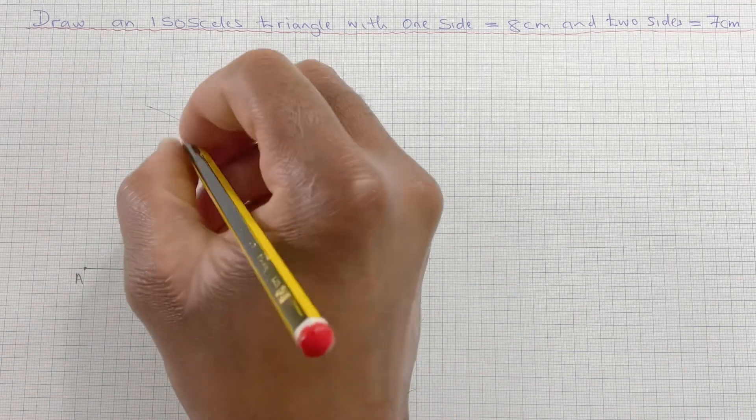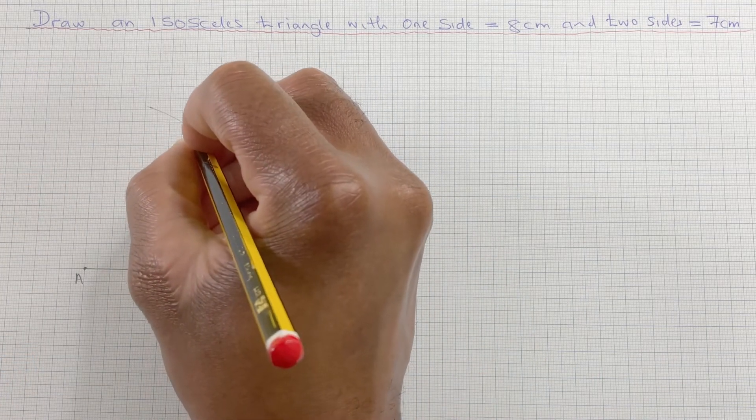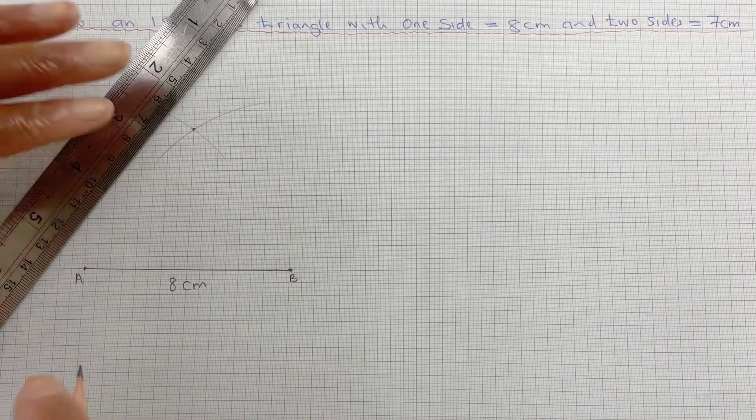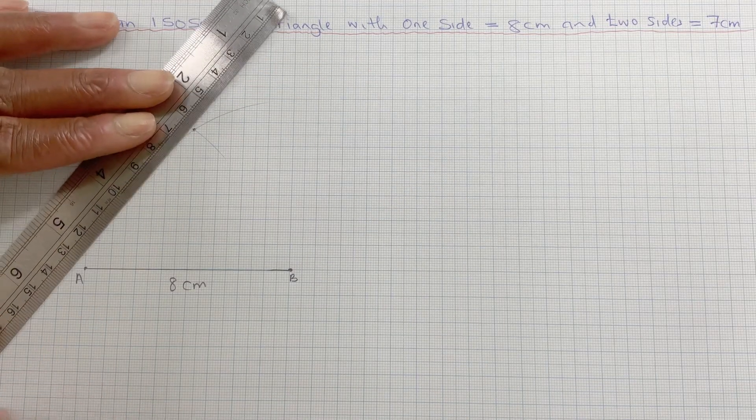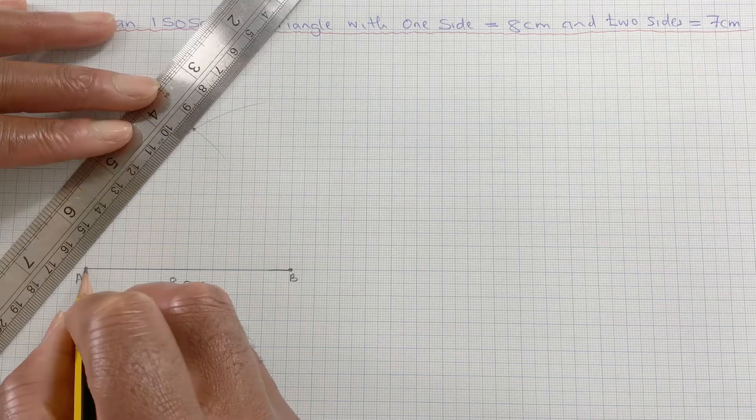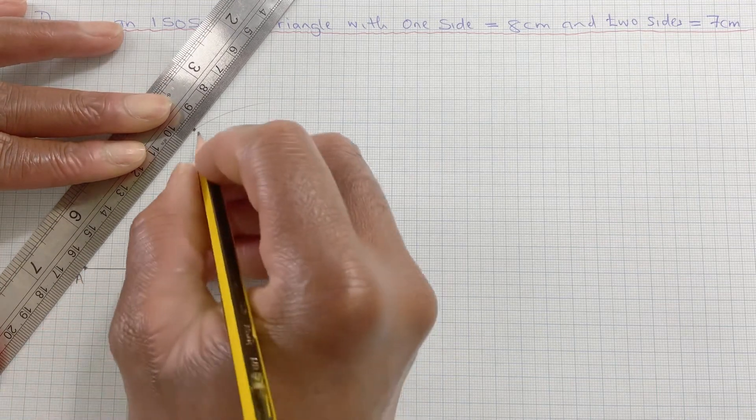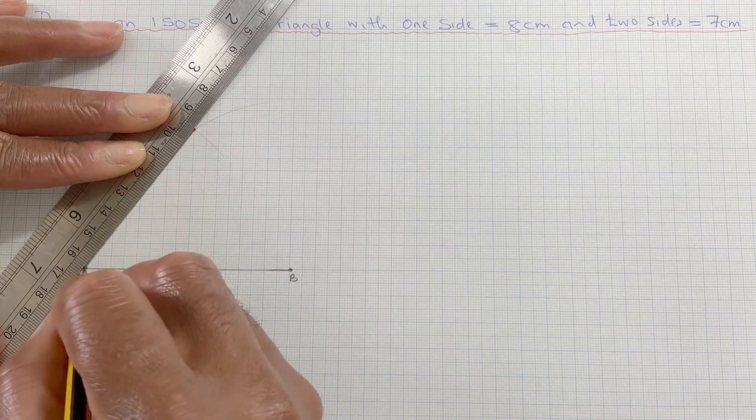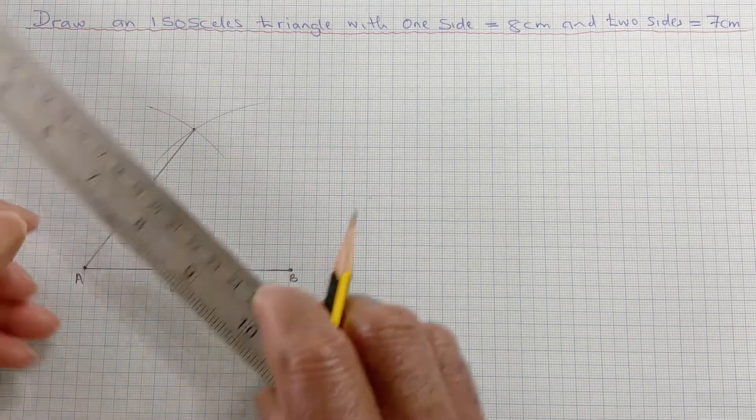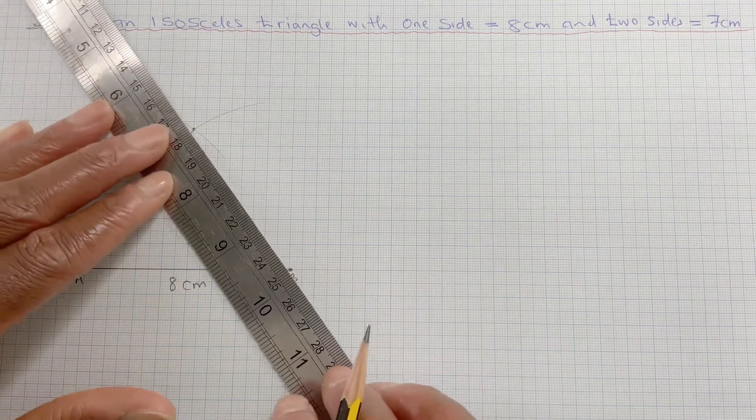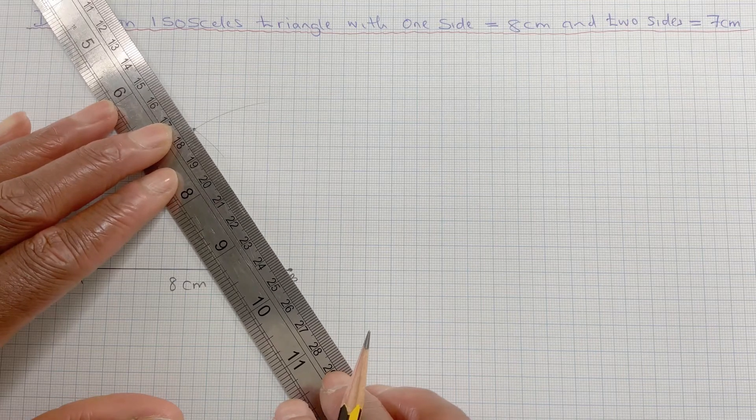So this is my point C. Then I need to draw a straight line from A to C, and a straight line from B to C.